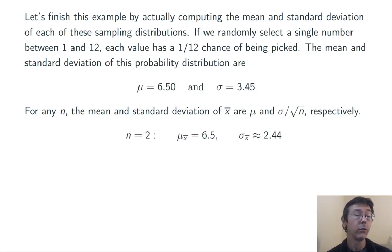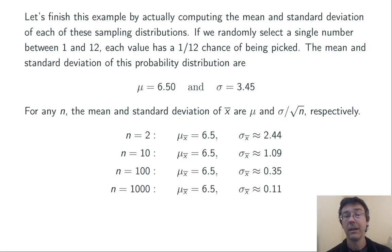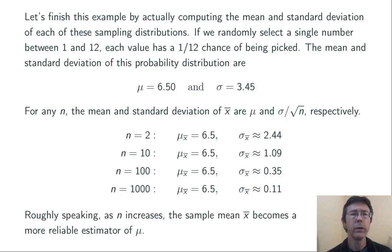For example, when n is 2, the mean is still going to be 6.5, but the standard deviation of x-bar is going to shrink to 2.44. Regardless of the n, that μ is going to stay the same, but as we start increasing n, we're going to see the standard deviation of x-bar get less and less. When n is 10, the standard deviation of x-bar is 1.09. When n is 100, it's 0.35. And when n is 1,000, it's 0.11. Roughly speaking, we interpret this to mean that as n increases, the sample mean x-bar becomes a more reliable estimator of μ. There's less variability in that statistic.